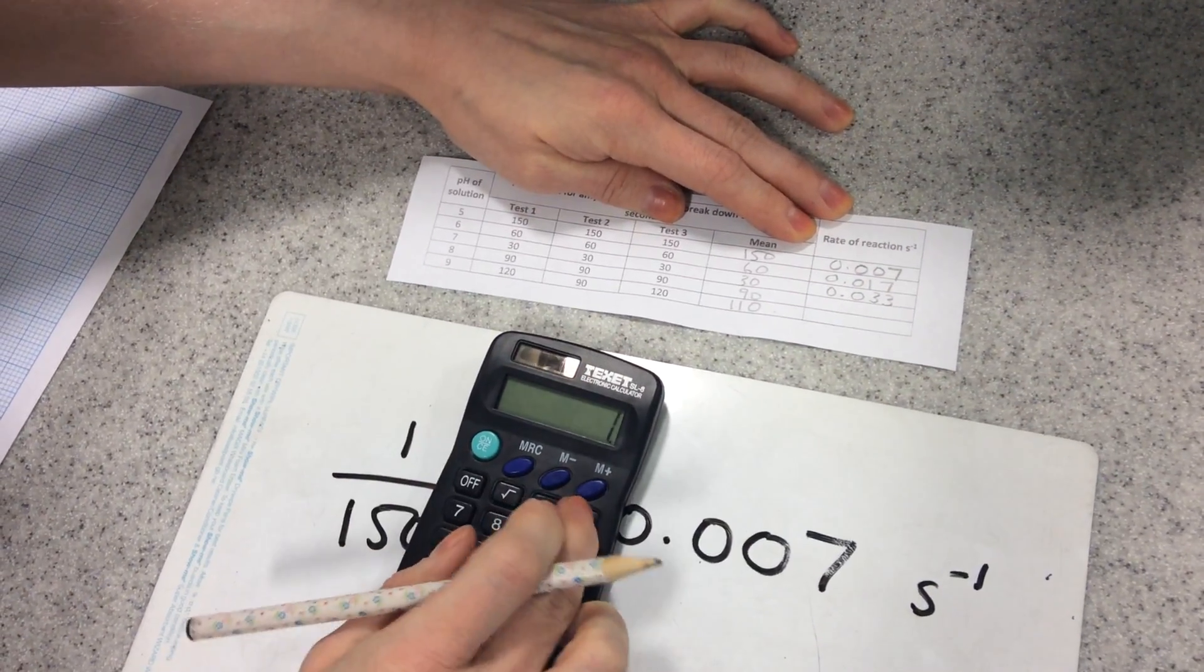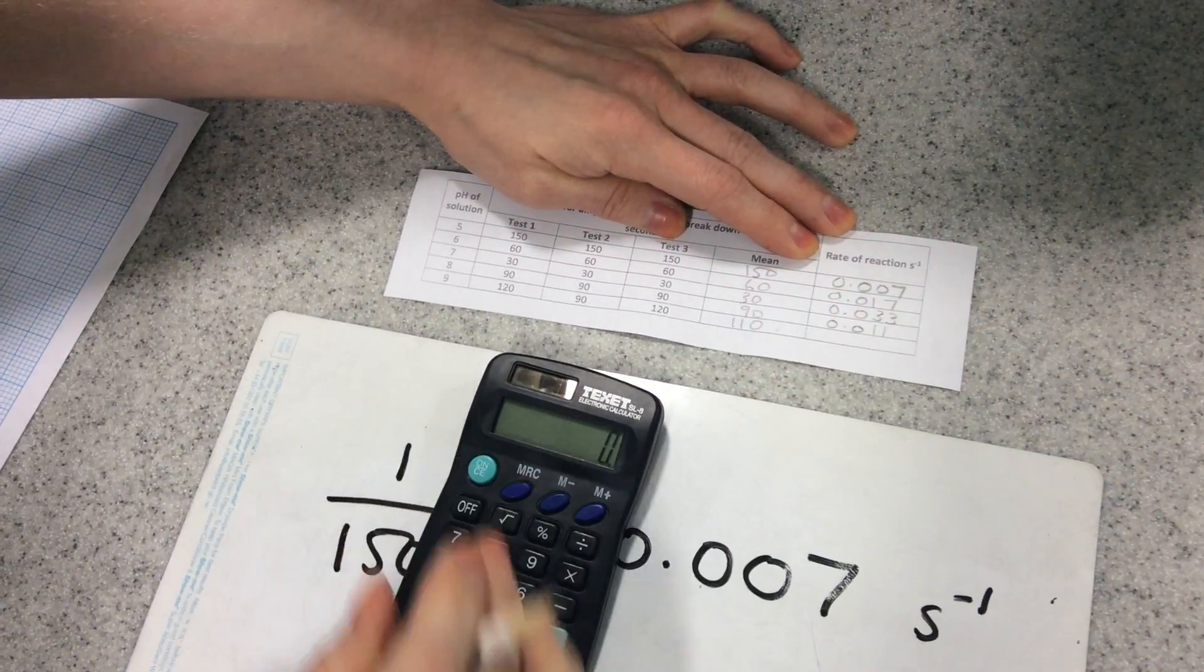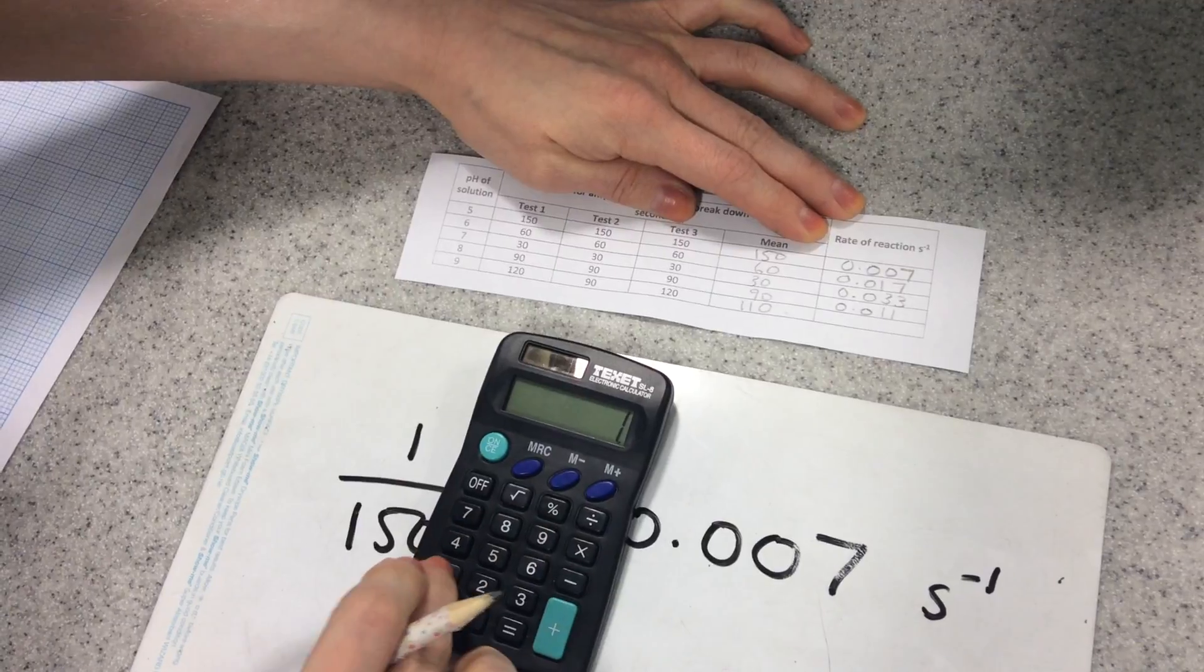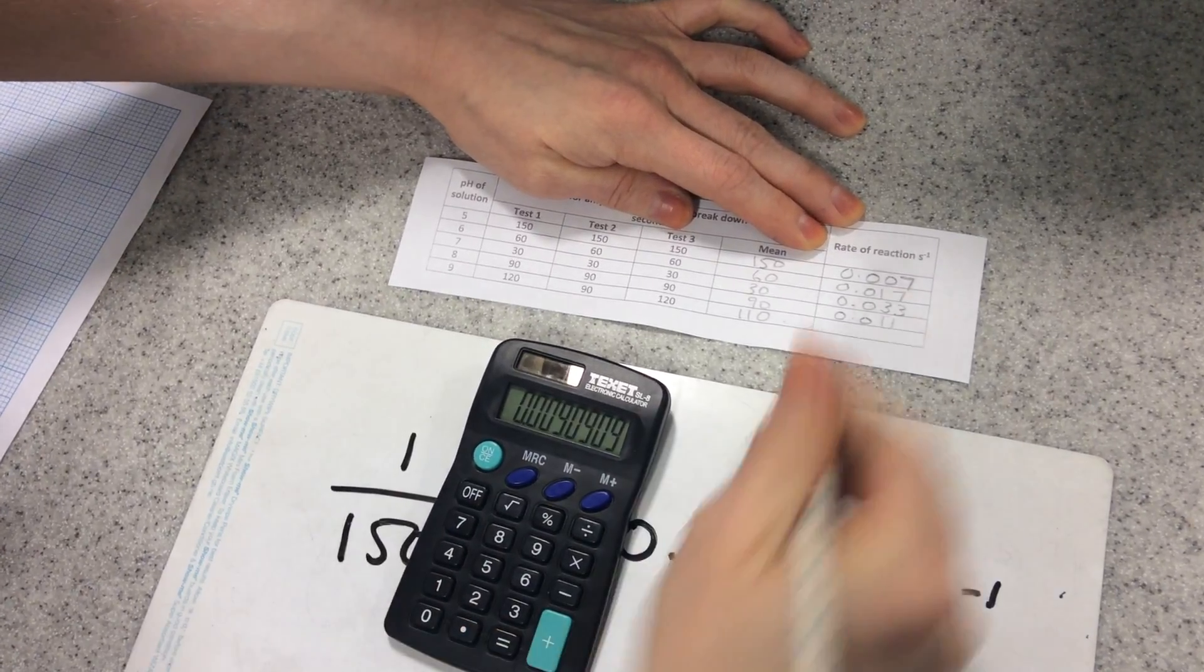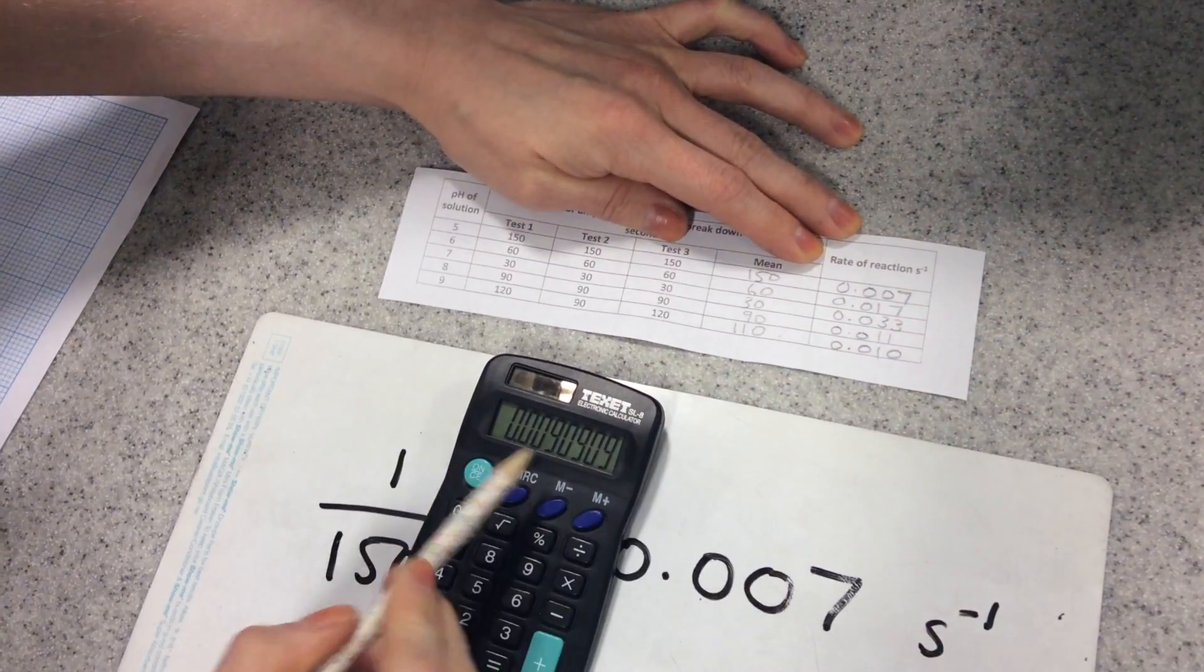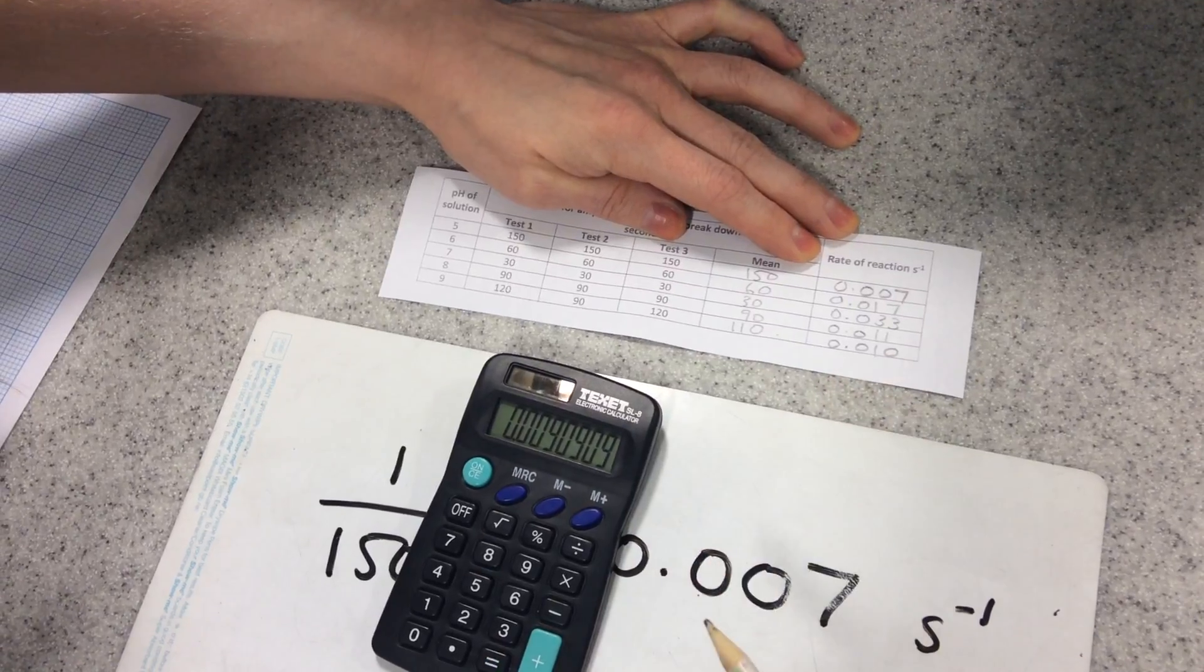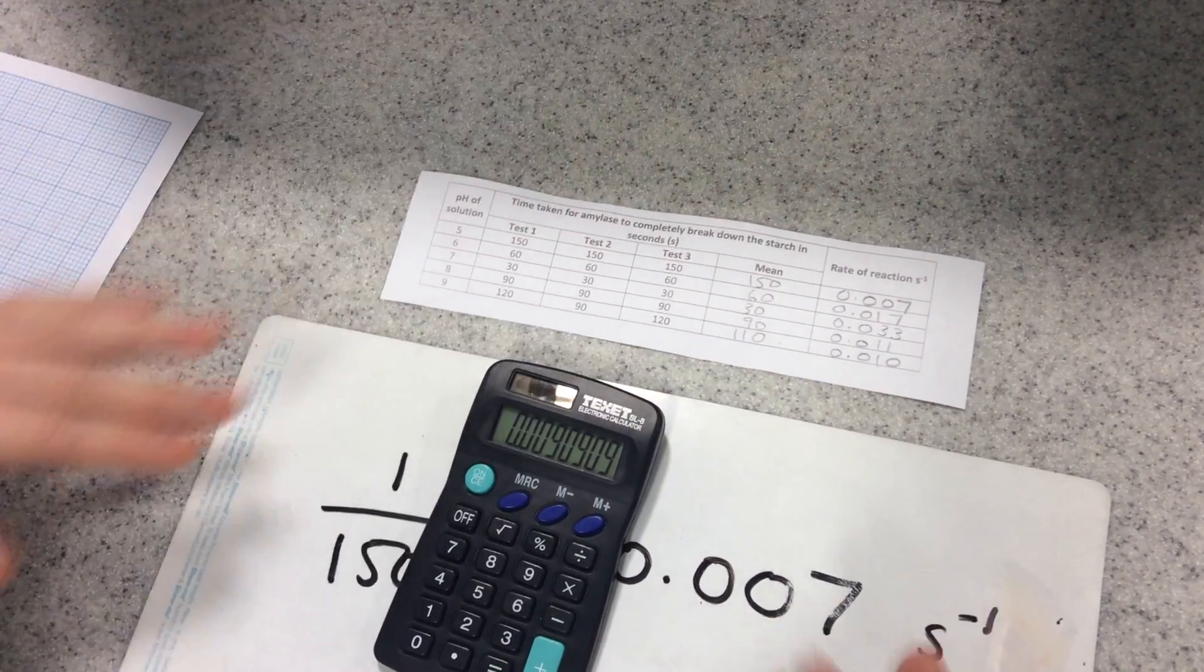then next one divided by 90, 0.011, and my last but not least, 1 divided by 110, gives me 0.010, because that 9 moves this to a 1, and I've added a 0 because I wanted it to have three decimal places.